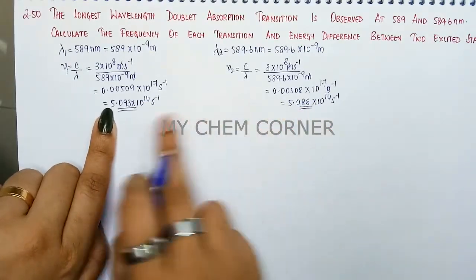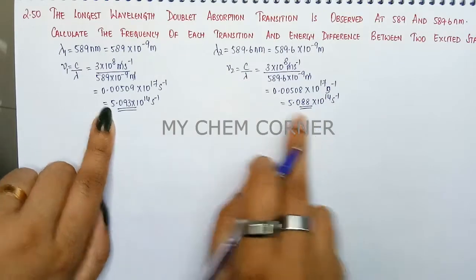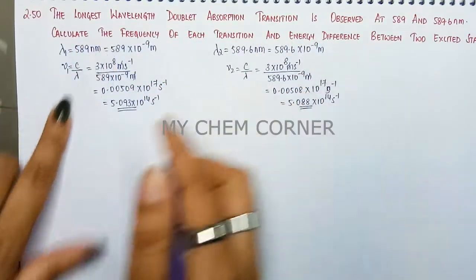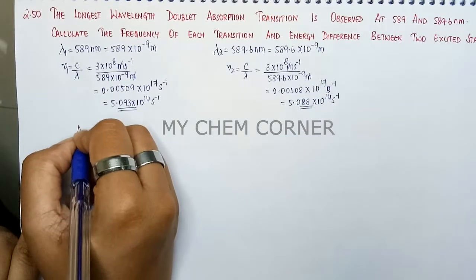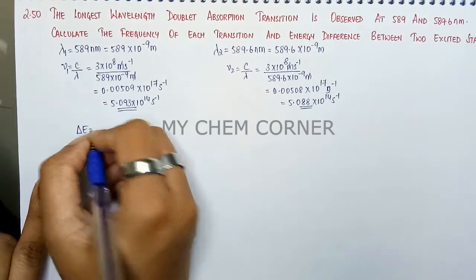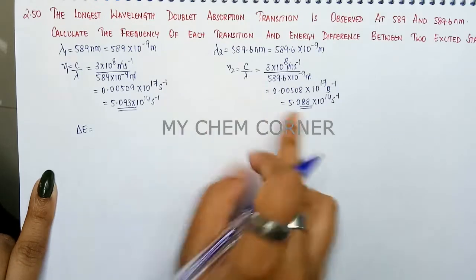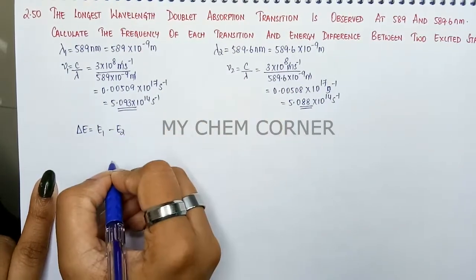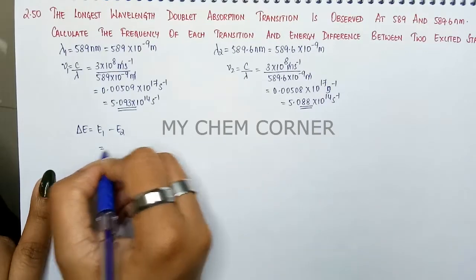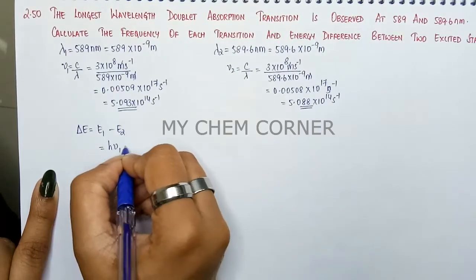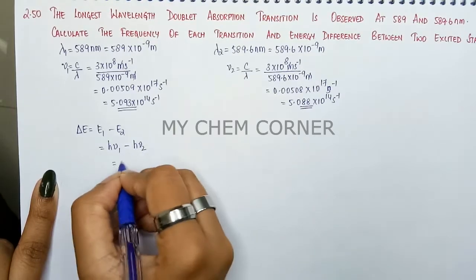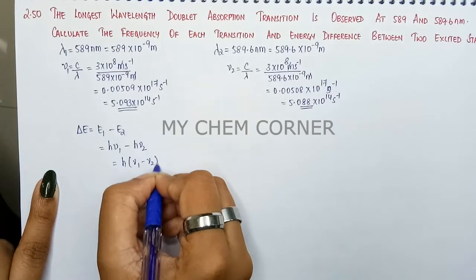We know what is the frequency of both right now. That answers the first question. We need to find out energy difference between both. Energy difference delta E equals, because the first frequency is more than the second one, we will do first state minus the second state. Energy formula: H nu minus H nu second one. In both H is common. So H into nu one minus nu two.